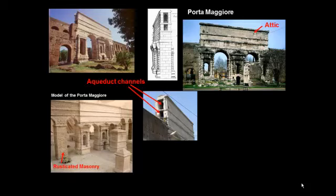This aqueduct was built at the point where Rome's two greatest roads converged. Here are a couple of terms you should know. An attic is the uppermost story of the aqueduct where the water channels ran. Rusticated masonry is that rough edge—basically a combination of smooth and rougher surfaces designed to give a more varied appearance. It was an artistic feature rather than an engineering necessity.